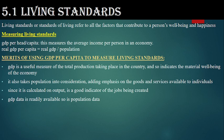GDP per capita measures the average income per person in an economy. You already have an idea what real GDP and nominal GDP mean. The formula is: Real GDP per capita equals real GDP divided by the population. This is the formula you use to calculate living standard.